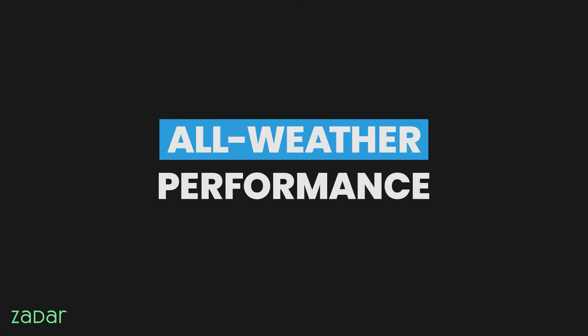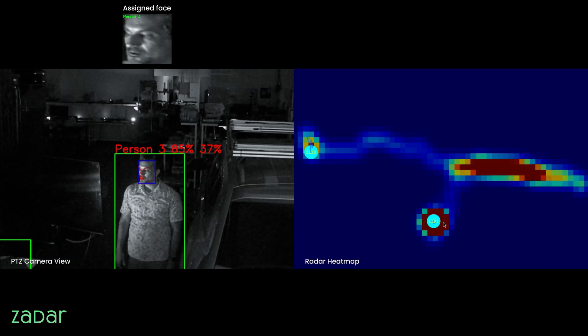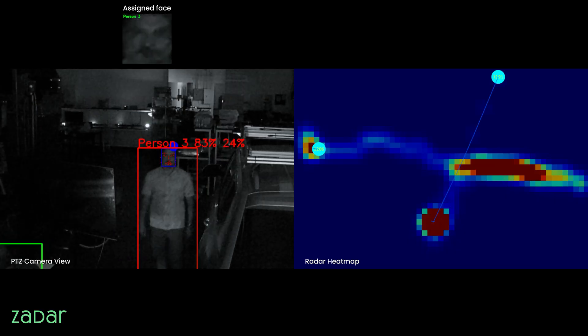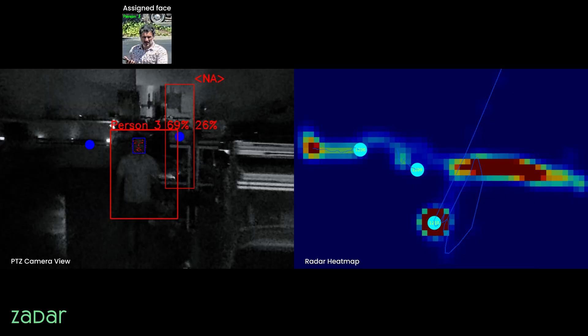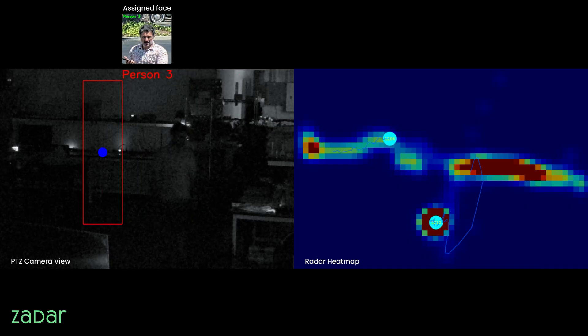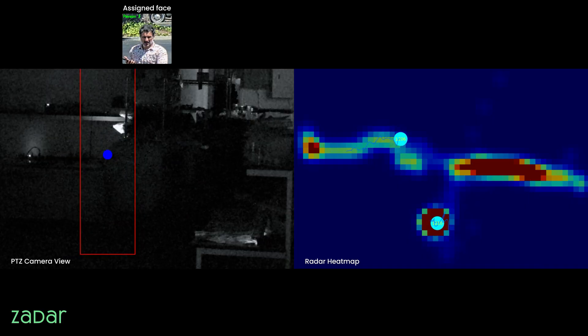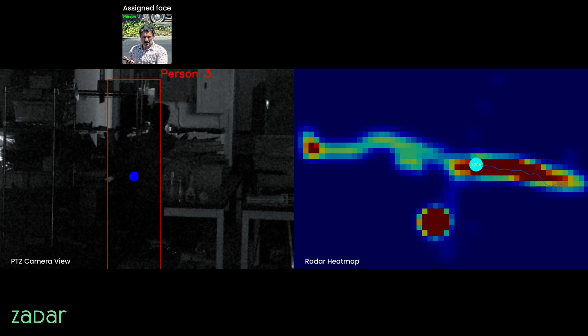All weather performance. Z-Prime's radar technology is immune to rain, fog, or total darkness. PTZ identifies the object in darkness with the assistance of radar and correlates it to the previously identified individual in the database, and maintains the identification even after the camera can no longer identify the object. And Z-Prime delivers clarity. Cameras may fail, but Zadar never blinks.